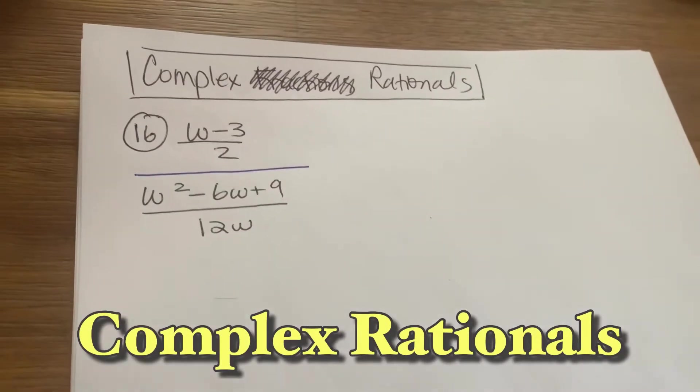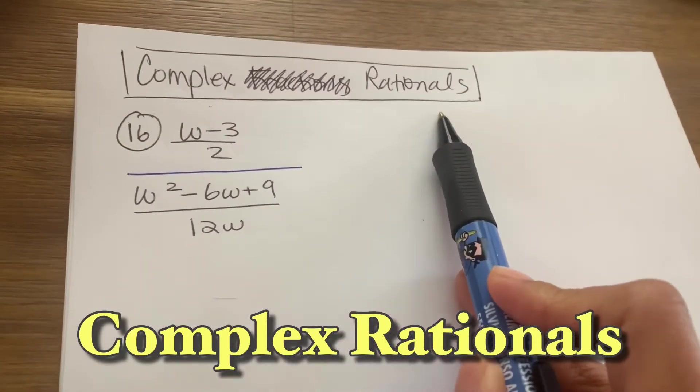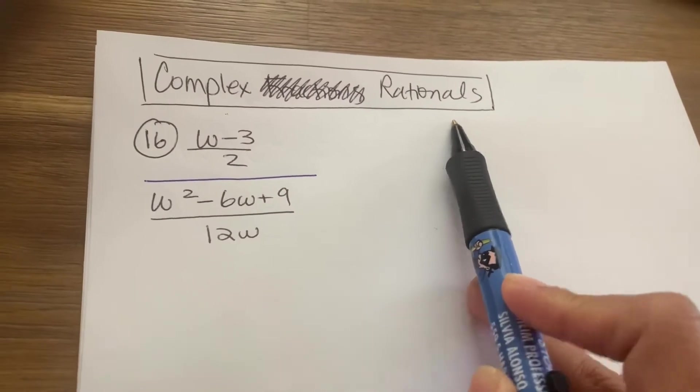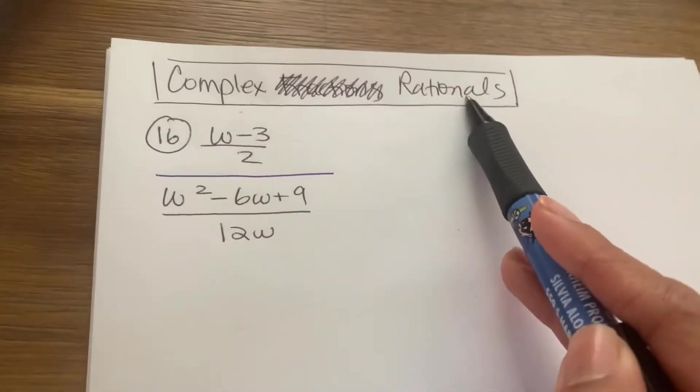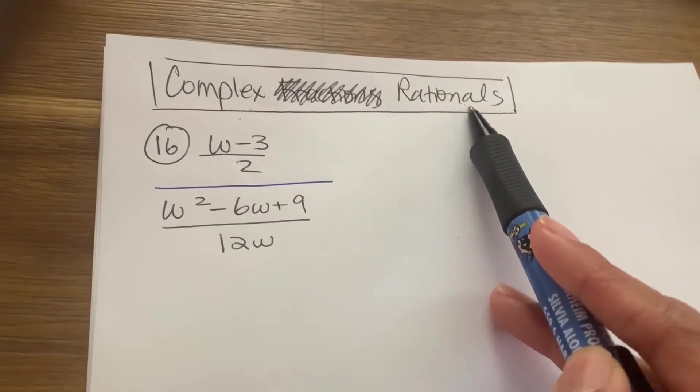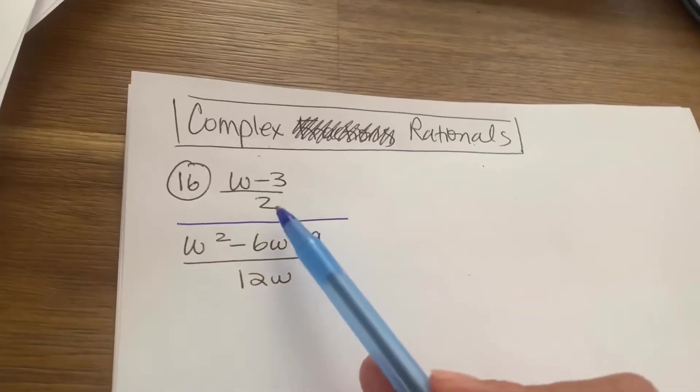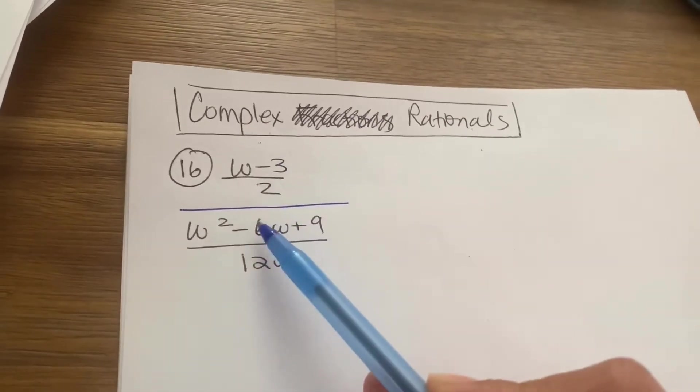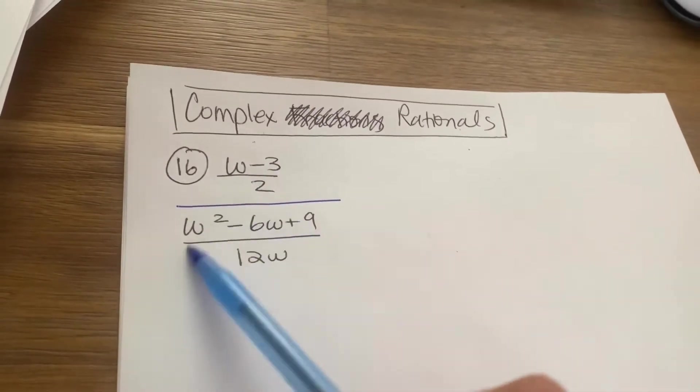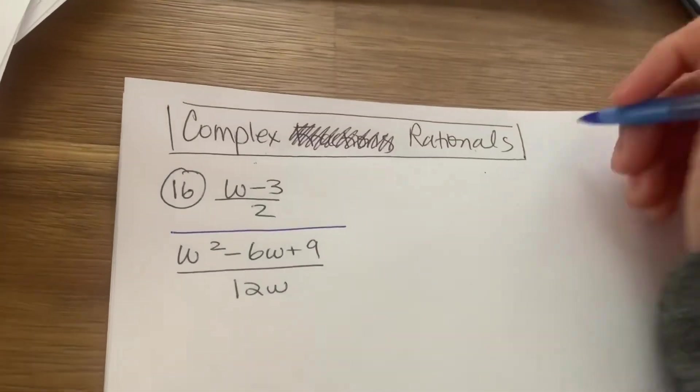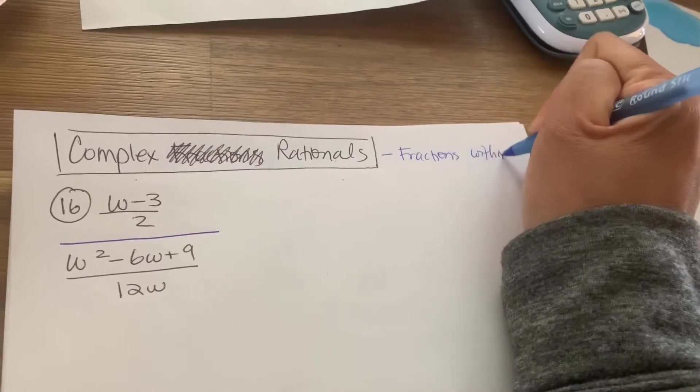Hi, this is Professor Nancy Mahan. In this video, we're going to be talking about complex rationals. So what are complex rationals? Well, the word complex means it's complicated, it's not simple, right? And rationals, again, are fractions with polynomials in it. So here's an example of a complex rational. So complex rational is, if you've noticed, it's a fraction within a fraction. Here's the big fraction, and then there's little fractions on top and on bottom. So it's fractions within another fraction.